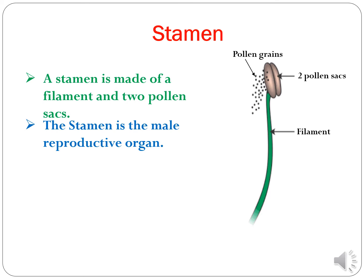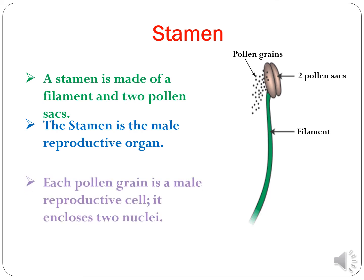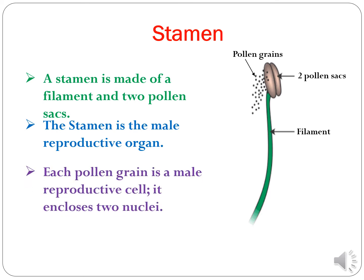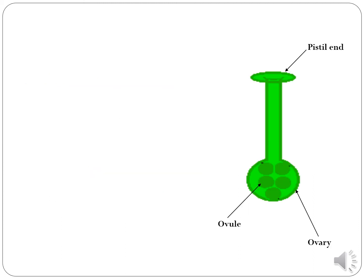The stamen is the male reproductive organ. Each pollen grain is a male reproductive cell. It encloses two nuclei — nuclei is the plural of nucleus. Each pollen grain, which is a male reproductive cell, contains two nuclei.